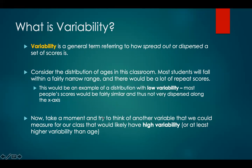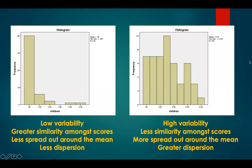Take a moment to think of another variable we could measure for our class that would likely have high variability, or at least higher variability than age. Now let's take a look at what low variability and high variability looks like in a histogram. A distribution with low variability is seen on the left — greater similarity among scores, less spread out around the mean, less dispersion. On the right, a distribution with very high variability: less similarity among scores, more spread out around the mean, and greater dispersion, with a high frequency of scores at various points on the x-axis.